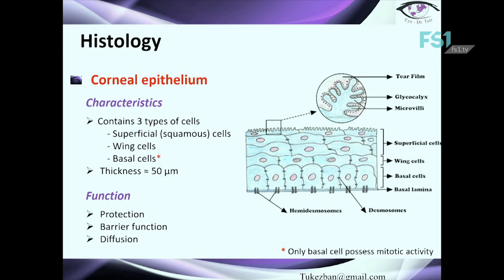In the slide you can also see hemidesmosomes and desmosomes — we'll discuss this in detail in a future presentation on corneal physiology. Briefly: desmosomes connect basal cells with each other, while hemidesmosomes connect basal cells with the basal lamina.